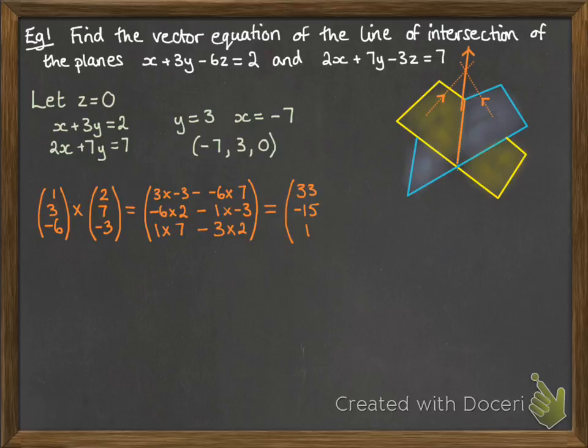And we get 33, minus 15, 1. So this is the direction of the vector that is now running in the same direction or parallel to that line of intersection. So to get the equation of that line, we put in the position vector that gets us on to that point. So we just choose those coordinates that we worked out when we set z equal to 0 and then add lambda multiples of the direction we're moving in. So that's the 33, minus 15, and 1.